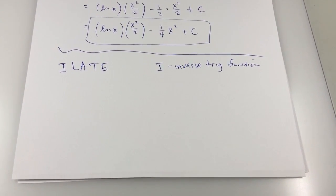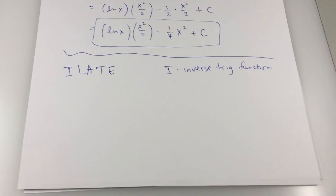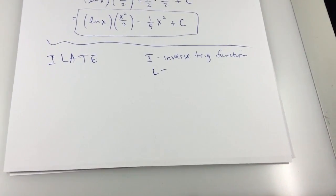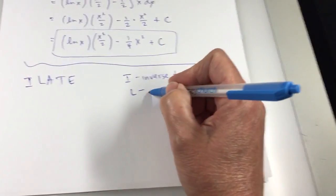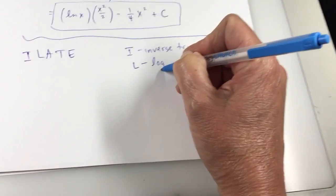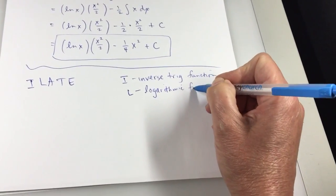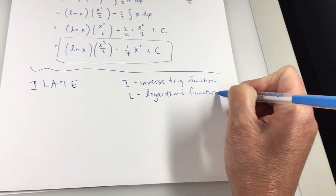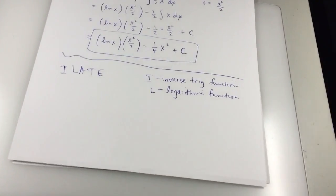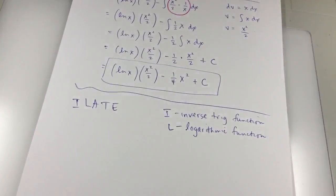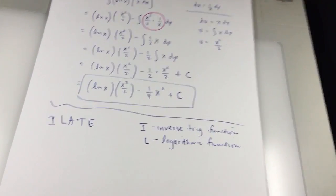If there's no inverse trig function, you go to the L. L is, what do y'all think? Log, with the form we just did. Logarithmic function. If you look back at the last example, there was a log in there. There was no inverse trig, but there was a log. That was U. Everything else was DV.